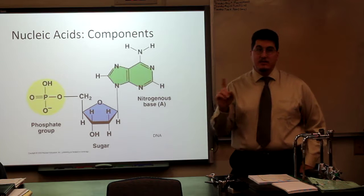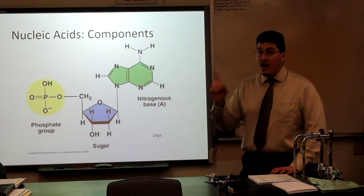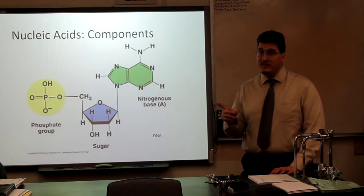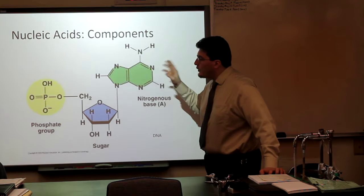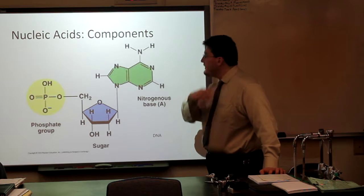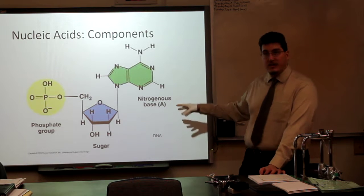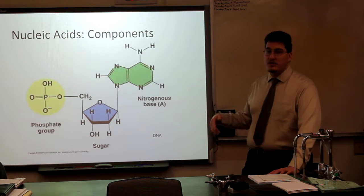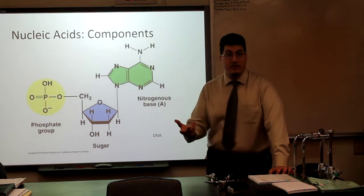You do not need to memorize the individual structures of amino acids, not amino acids, excuse me, of nucleic acid nitrogenous bases. But this one is adenine. You will recognize adenine and guanine by their double ring structure, and cytosine and thymine for DNA by their single ring structure, and cytosine and uracil for RNA by their single ring structure.